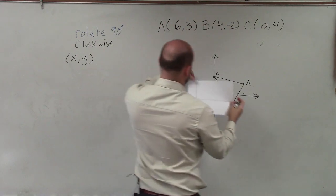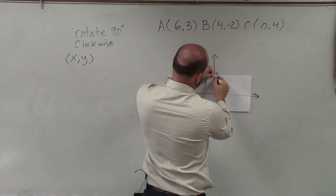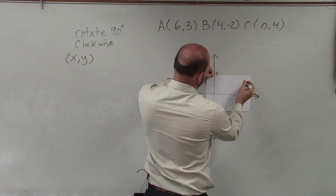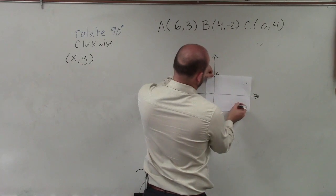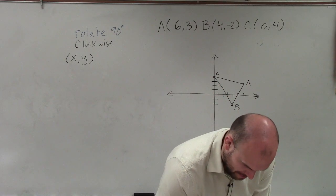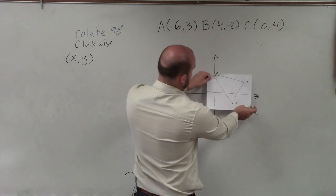So over here, if I kind of put this in where the x-axis is, what I can do is I can kind of label where my points are because I can see through the paper. Now you might not be able to.